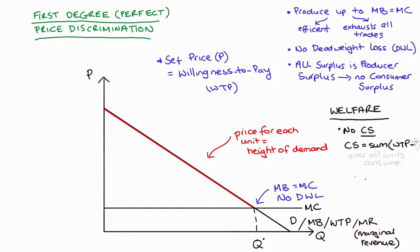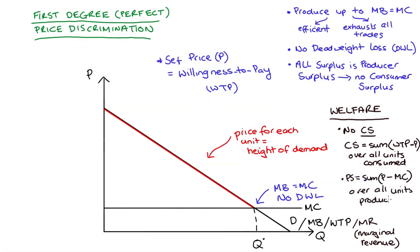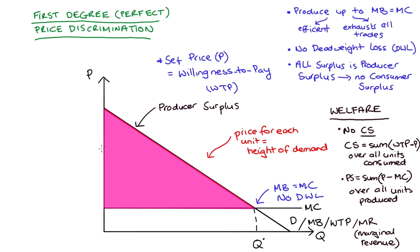If we think about welfare analysis, there will be no consumer surplus in this market. Consumer surplus is equal to the sum of the differences between the consumer's willingness to pay for a unit and the price they pay, summed over all units consumed. But in our example, price equals willingness to pay for each unit consumed, so there's never any difference — so there is no consumer surplus. Producer surplus will be equal to the sum of price minus marginal cost over all units produced, captured by the difference between our demand curve, which tracks the price, and our marginal cost curve — so it will be this pink area here. This is the only surplus in this market, so producer surplus equals total surplus.